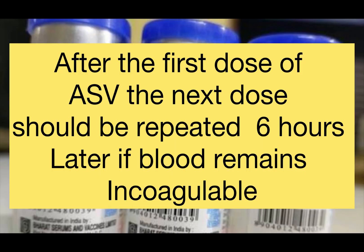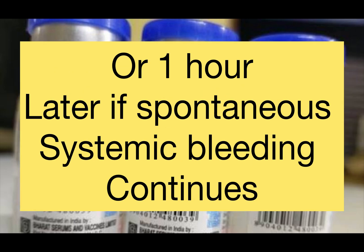Following the initial dose, give 6 to 10 vials every 6 hours until clotting time normalizes or local swelling subsides. After the first dose, the next dose should be repeated 6 hours later if blood remains incoagulable, or 1 hour later if spontaneous systemic bleeding continues.